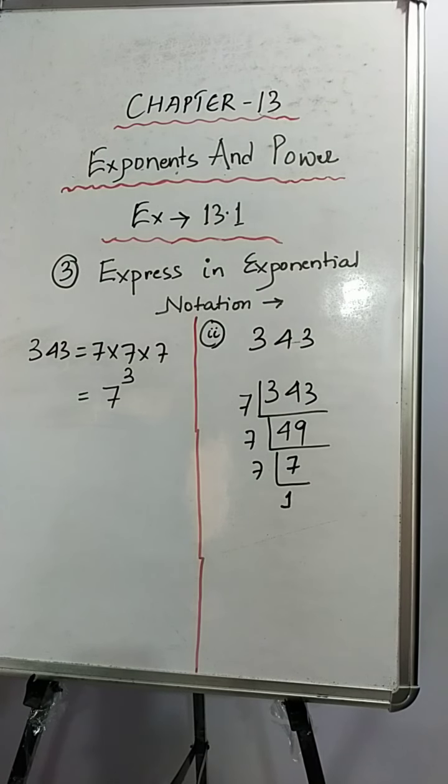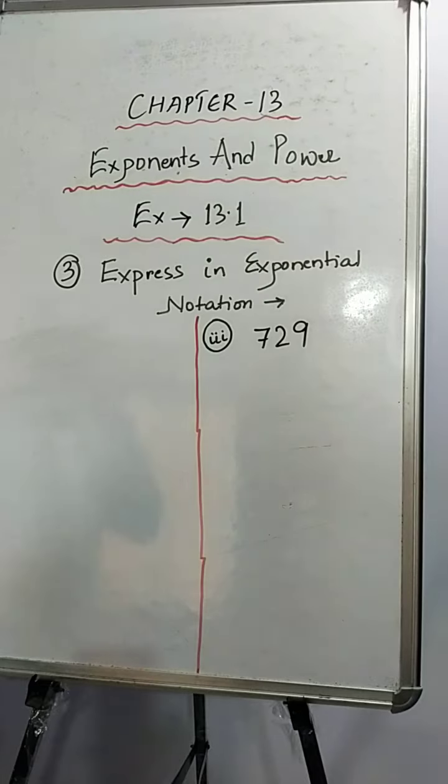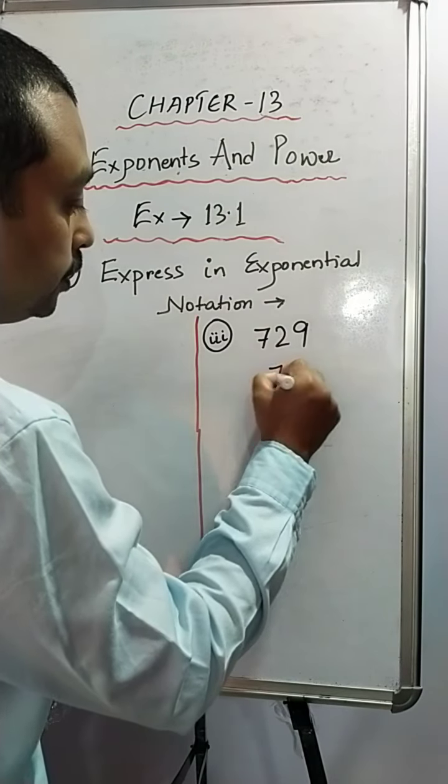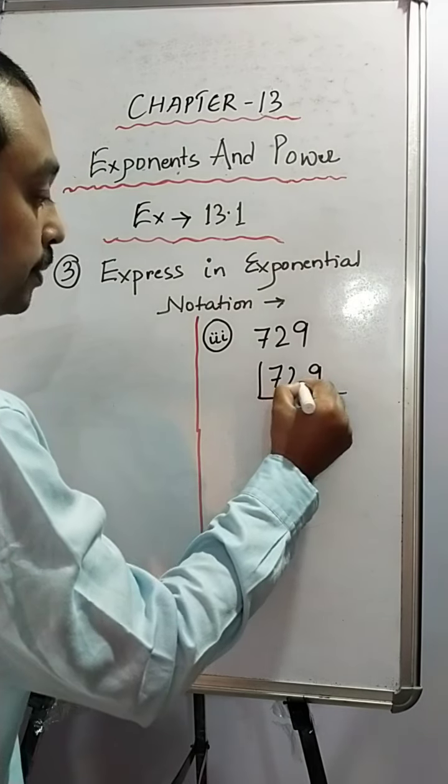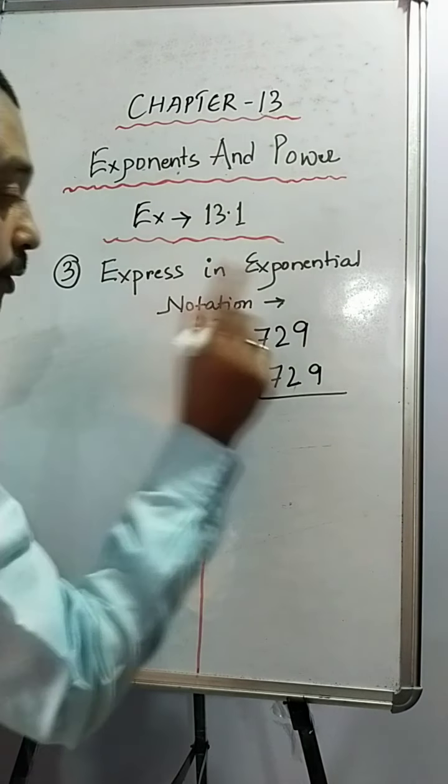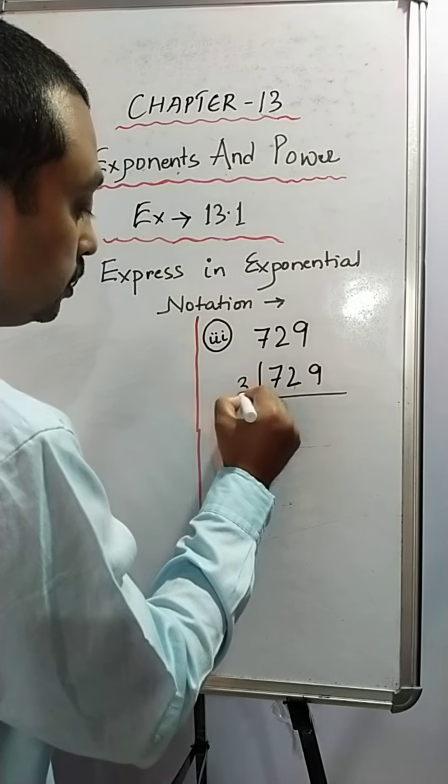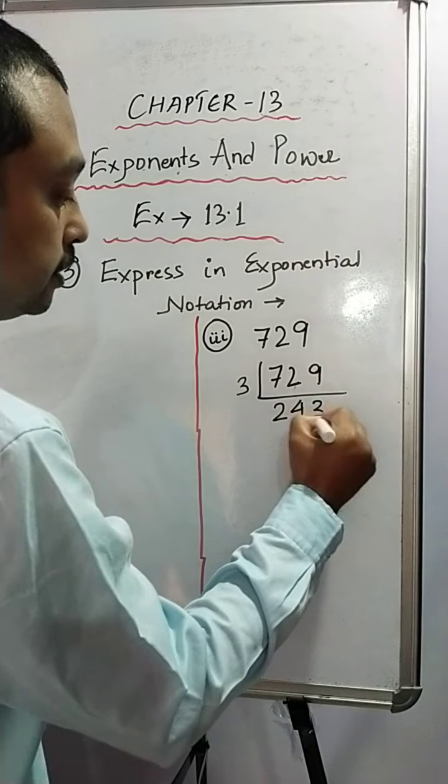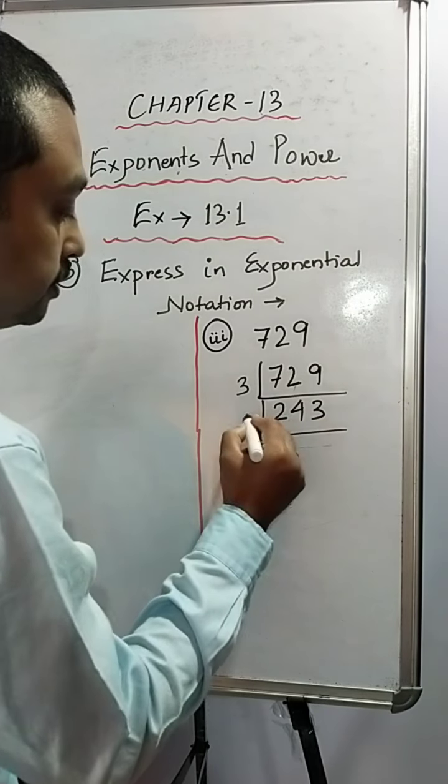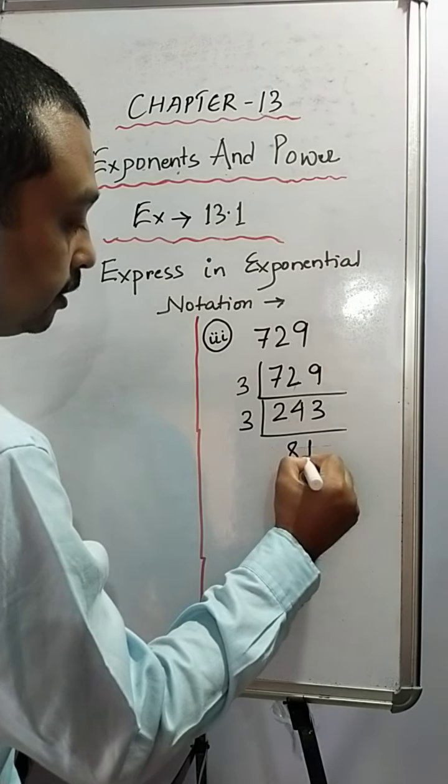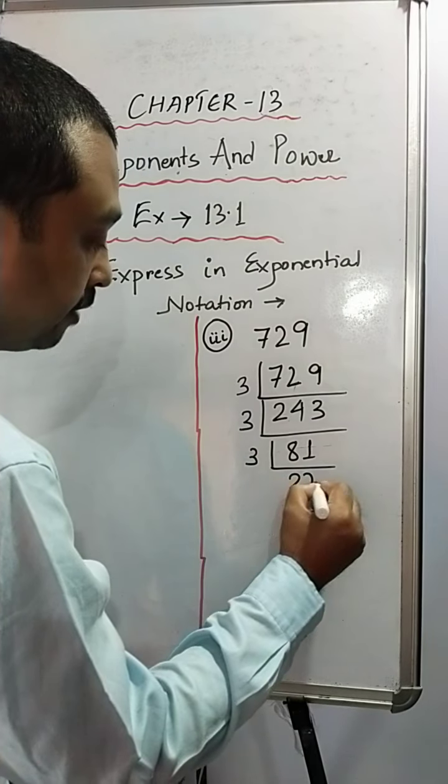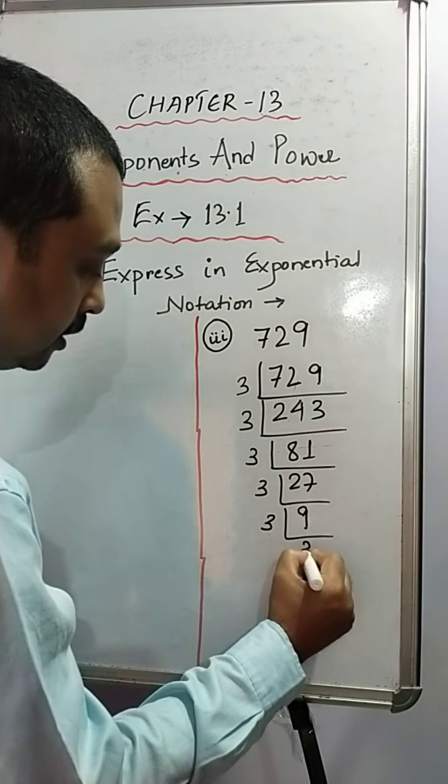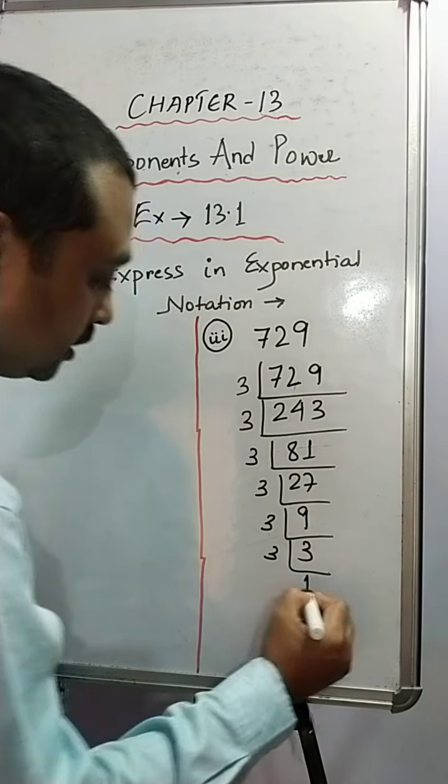Now, let's move on to sum number 3. So sum number 3, we have 729. So we have to do the prime factorization first. So this number is divisible by 3, not with 2, but with 3. So 3 twos are 6, 3 fours are 12, 3 threes are 9. Again, this is divisible by 3. 3 eights are 24, 3 ones are 3. 3 twenty-sevens are 81. 3 nines are 27, 3 threes are 9, 3 threes are 9, and 3.